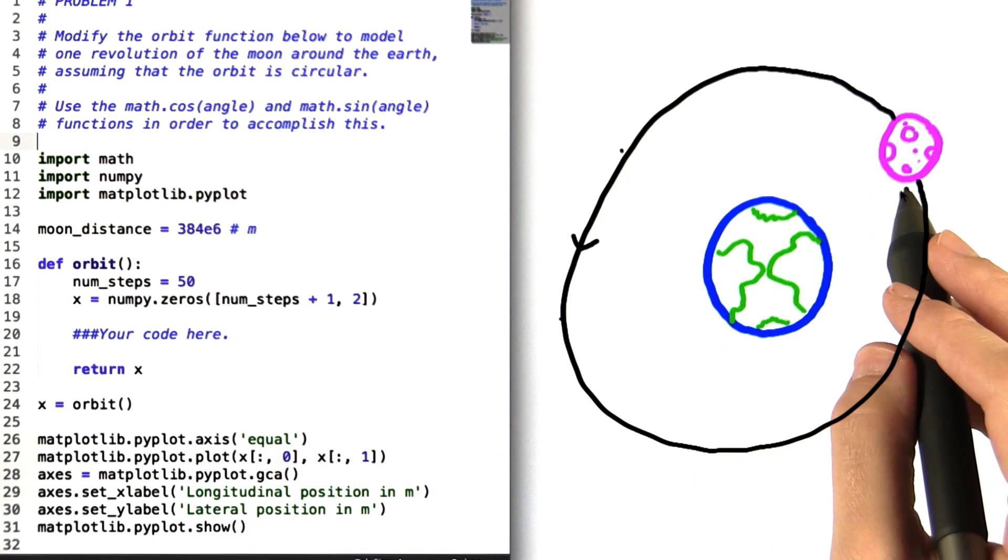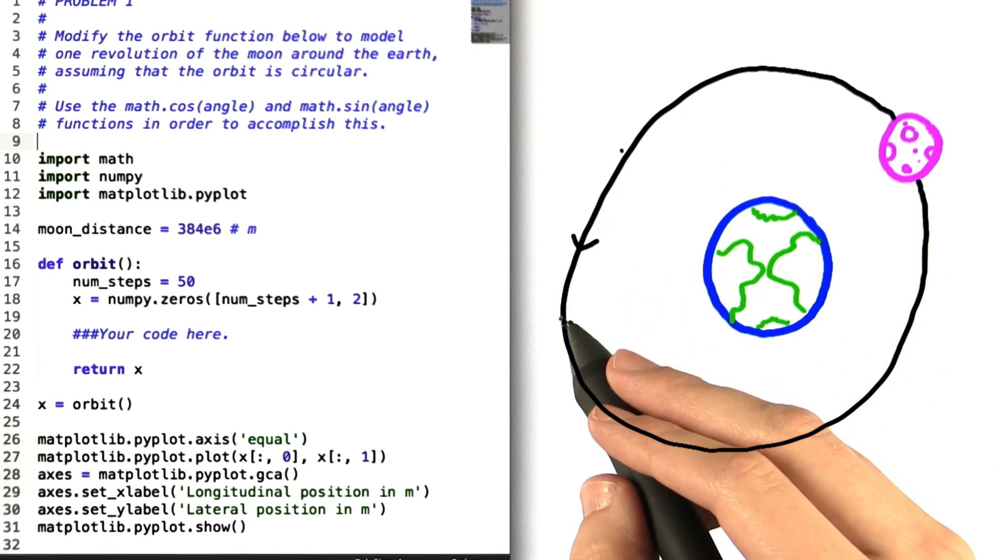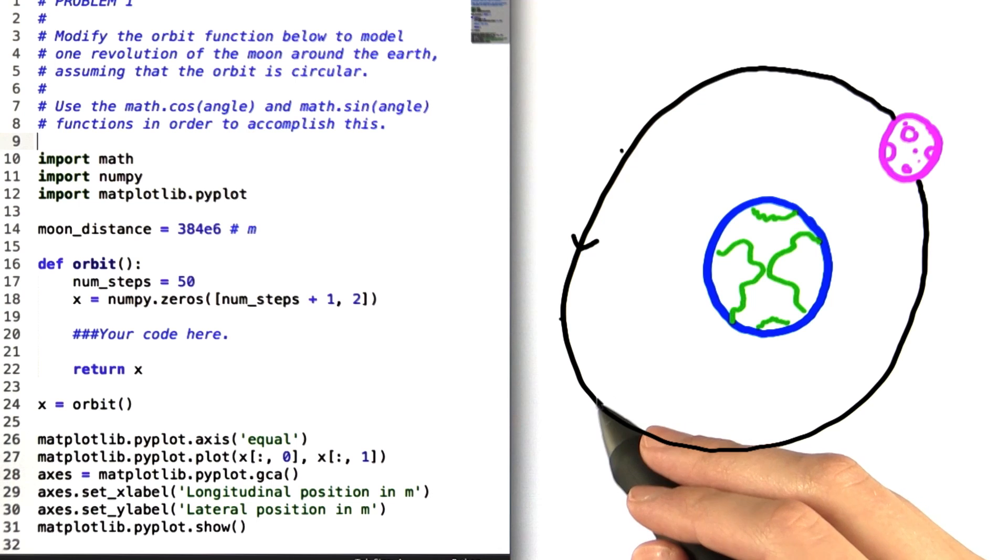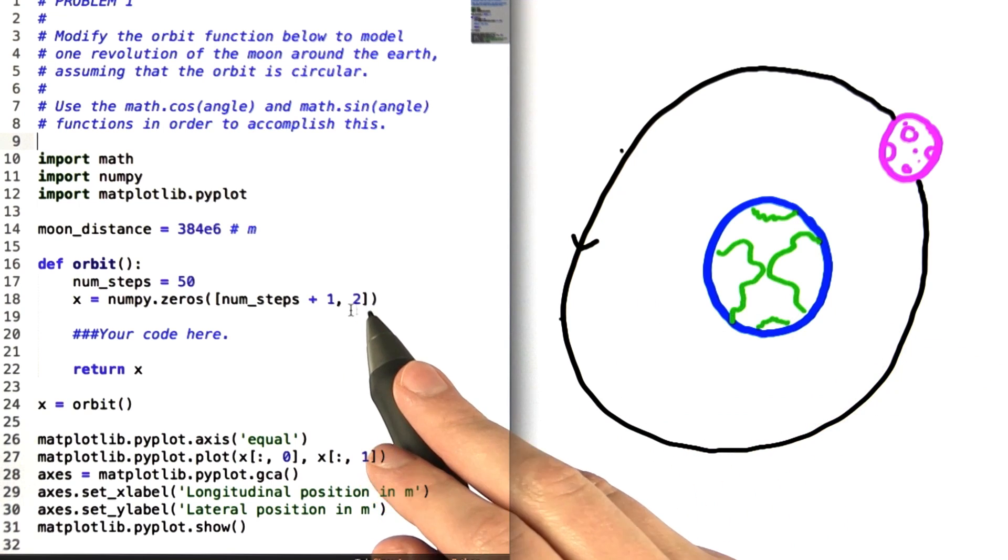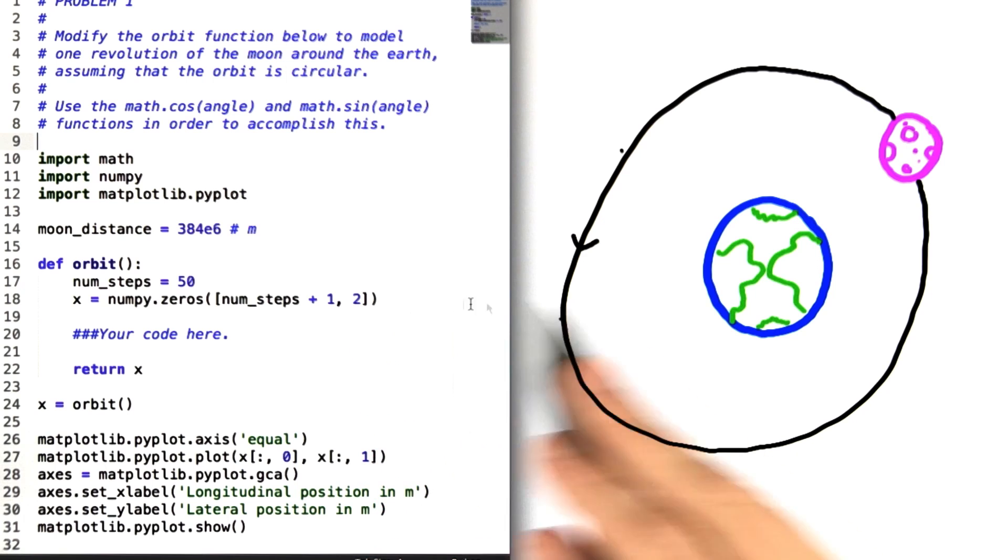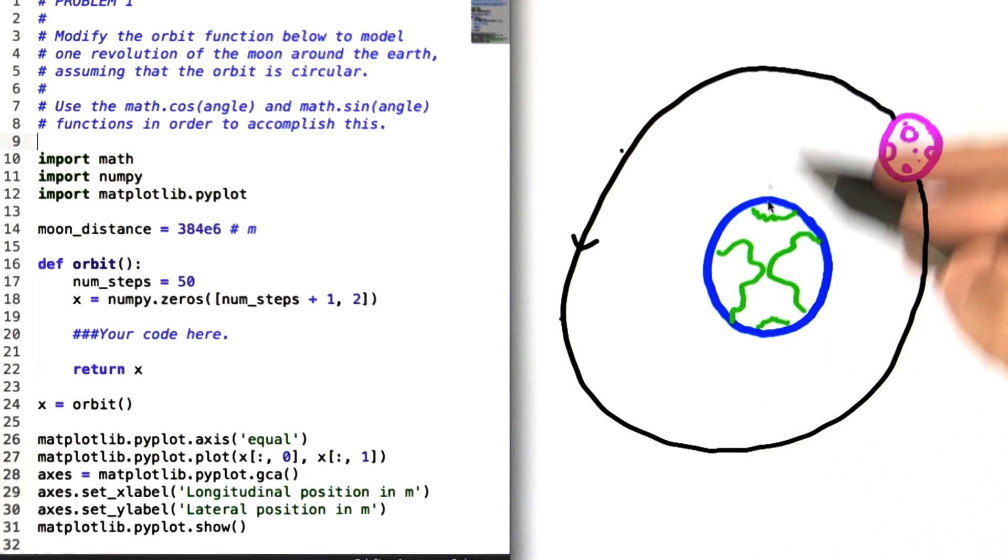The reason for this is that if we're watching the moon step around the earth 50 times, then the number of positions that we're actually looking at is 50 plus 1. Looking back at x, we see that there are two columns in the array, one for the horizontal position of the moon compared to the earth, and one for the vertical position.